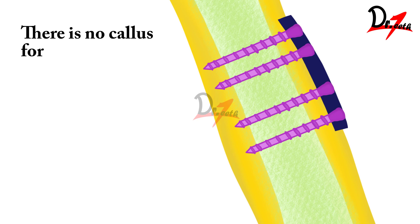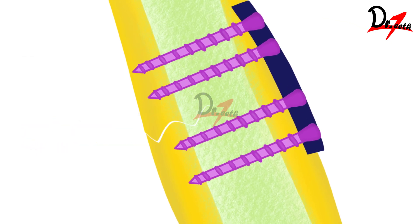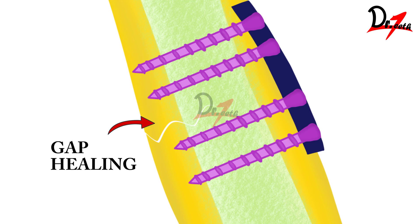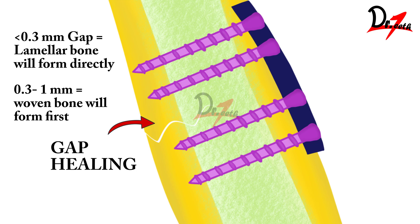In primary intention there is no callus formation, and healing can occur by either gap healing or contact healing. Even with rigid fixation, muscle pull or function can create small gaps after a few days, and in those cases we have gap healing. The type of bone formed depends on the amount of gap: if the gap is less than 0.3 mm, lamellar bone will form directly; but if the gap is between 0.3 and 1 mm, woven bone — the immature bone — will form first, and then it will mature and convert to lamellar bone.